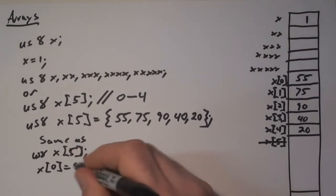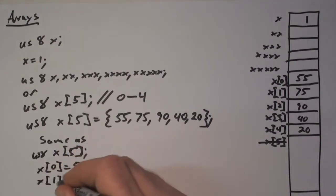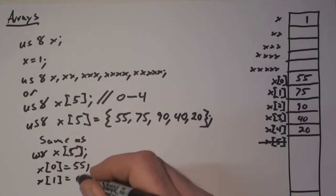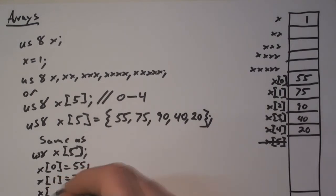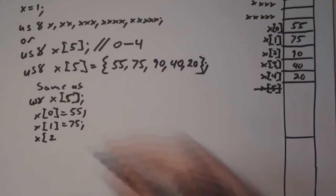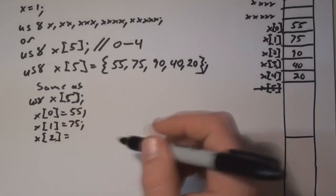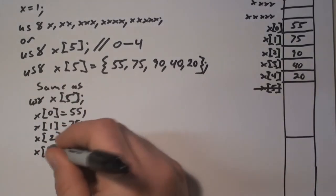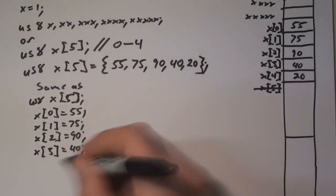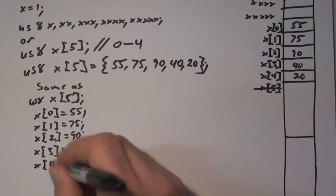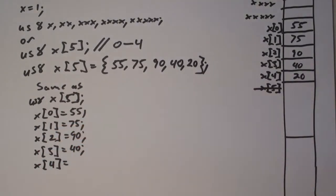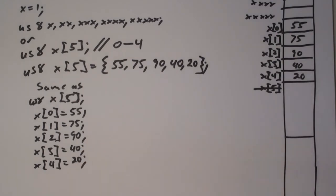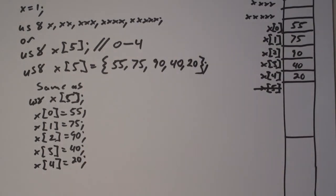This could also be done like this, where you declare the variable as we have before — a uint8 variable x of size 5 — and then you assign a value to each element in the array. This takes a lot more lines. Effectively as a program, it's identical to the above.